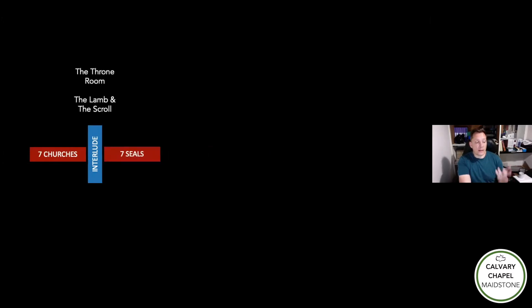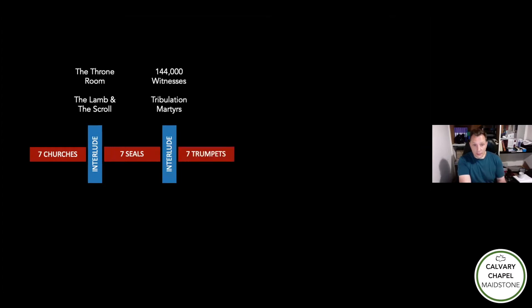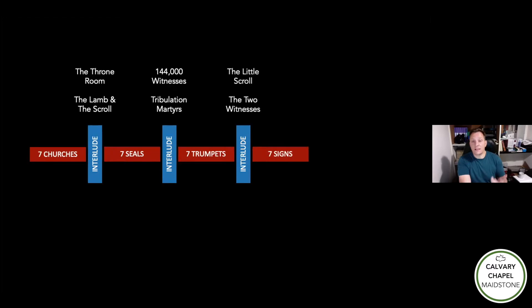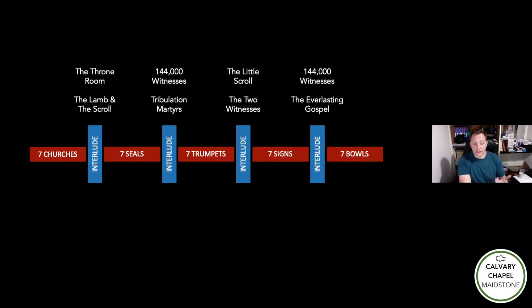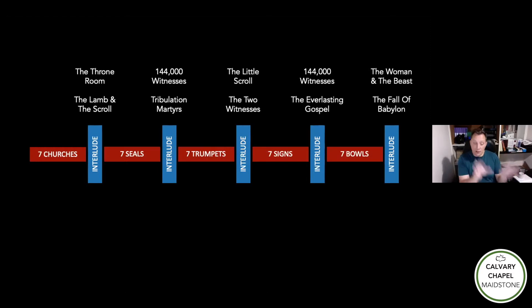The book of Revelation is made up of a series of sevens. The first seven is seven churches, followed by an interlude, then seven seals. Those seven seals are followed by an interlude, then seven trumpets. The narrative continues with a further interlude, then seven signs. Those seven signs are followed by an interlude, and then seven bowls, followed by a final interlude. That is the basic structure or design of the book of Revelation.